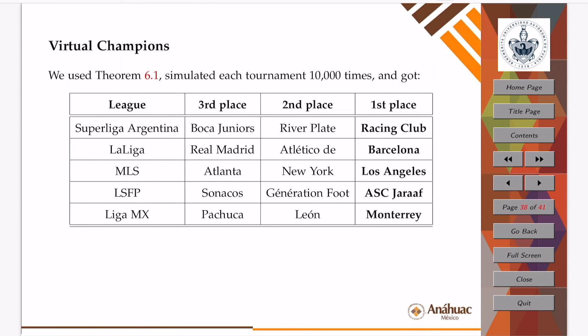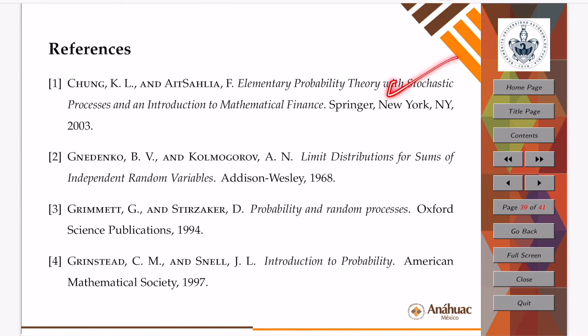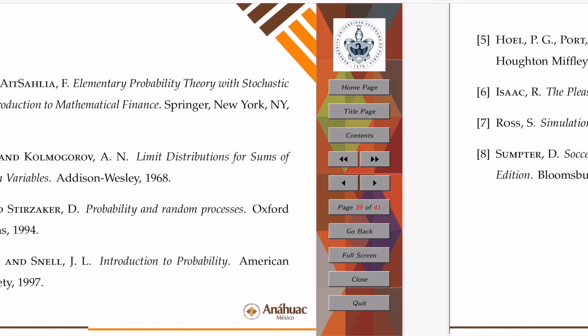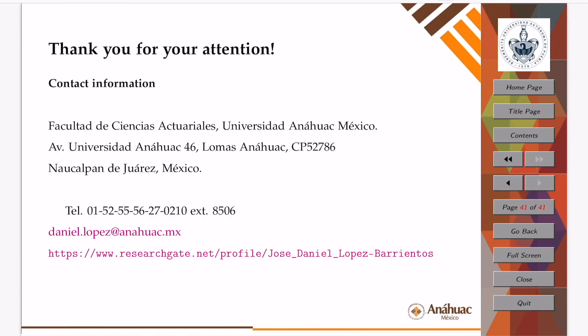The whole point of our presentation was to present a way to simulate results that goes from taking just empiric distributions to the Poisson random process, and then to just use the weak law of large numbers to simulate a football tournament. Here we present our references, and finally, we thank you for your very kind attention.